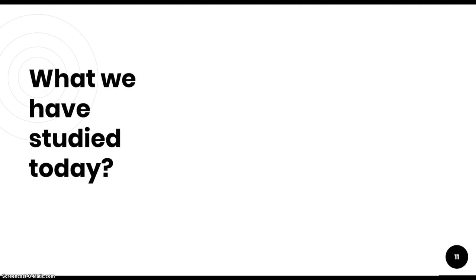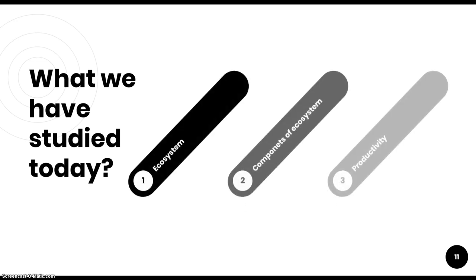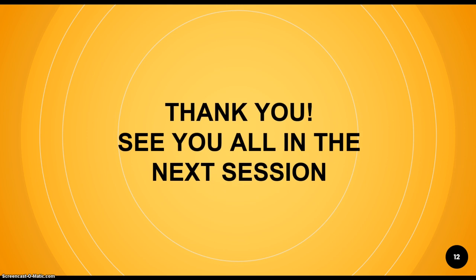In this session, we have studied about the basics of ecosystems, the components of ecosystems — biotic and abiotic — producers, consumers, and decomposers, and one of the most important functions of the ecosystem: productivity. This sums up today's video lecture. Hope to meet you in the next session. If you have any doubts, feel free to contact me. Thank you.